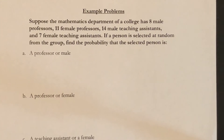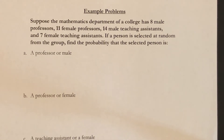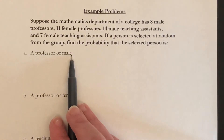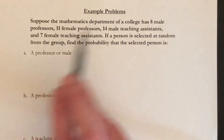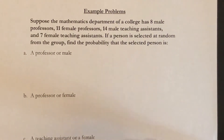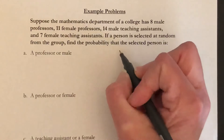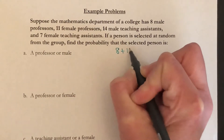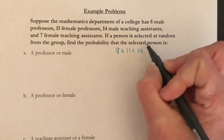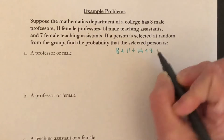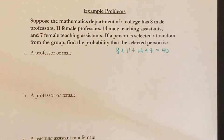Example problem: suppose the math department of a college has 8 male professors, 11 female professors, 14 male teaching assistants, and 7 female teaching assistants. If a person is selected at random from the group, find the probability that the selected person is a professor or male. First, I have to figure out how many people we're talking about total so I know what my denominator for these probabilities will be. The total is 8 + 11 + 14 + 7, which gives a total of 40 people. So 40 is going to be my denominator.